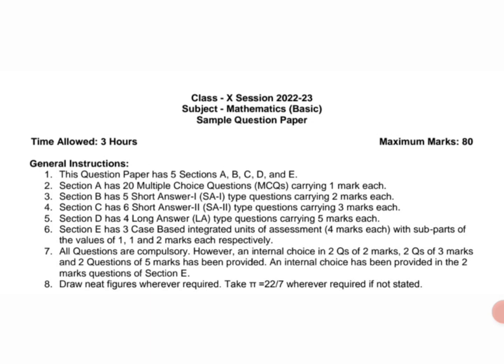The instructions are the question paper has five sections A, B, C, D, and E. Section A has 20 multiple choice questions MCQ carrying one mark each. Section B has five short answer SA-1 type questions carrying two marks.